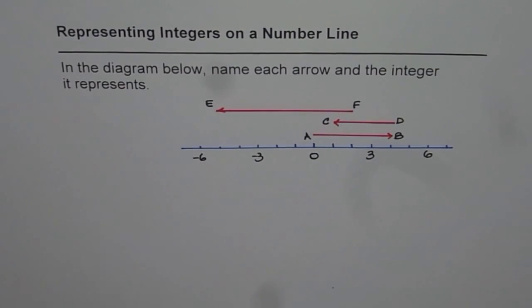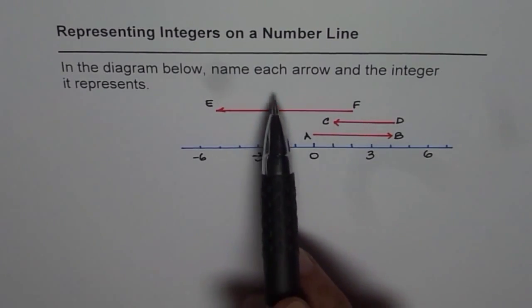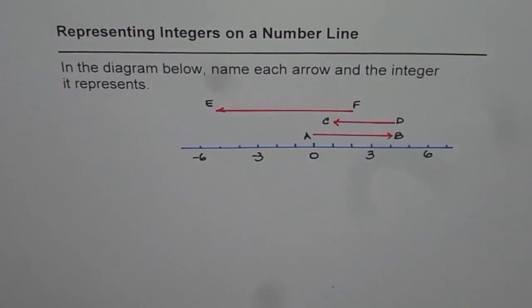Representing integers on a number line. In the diagram below, name each arrow and the integer it represents.